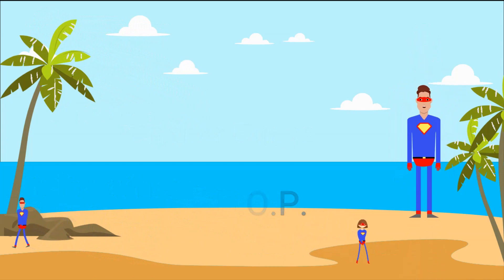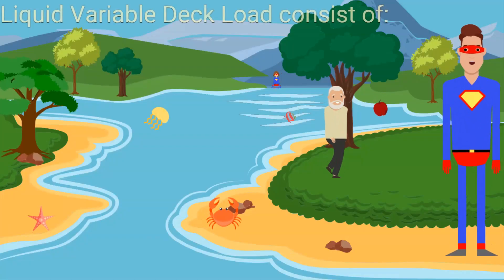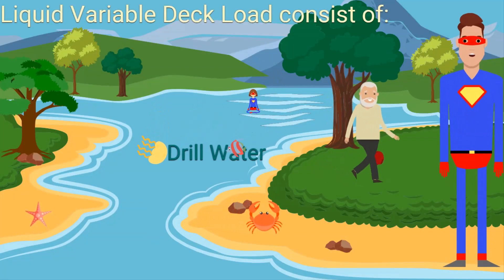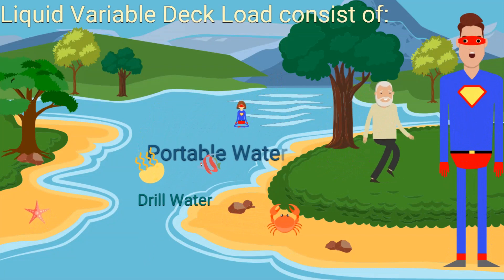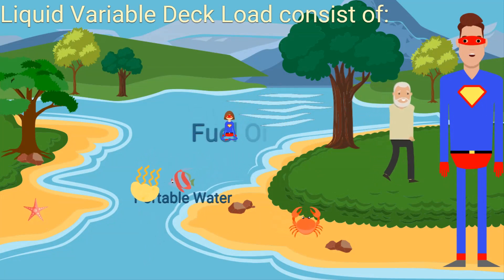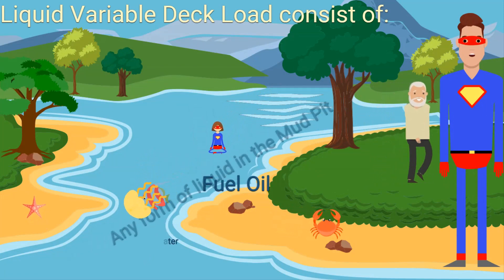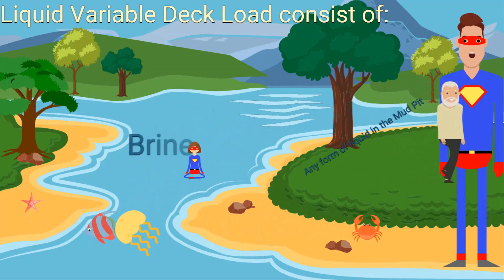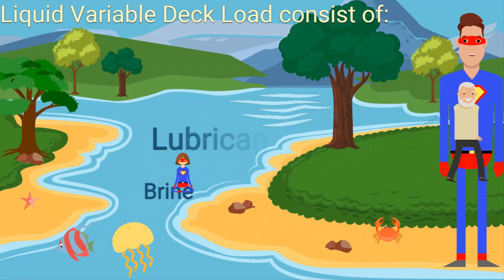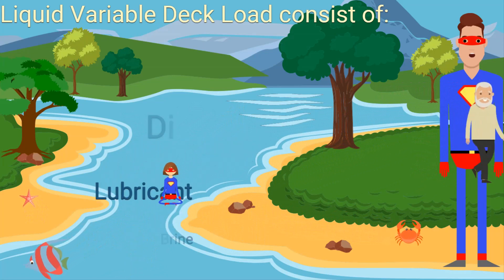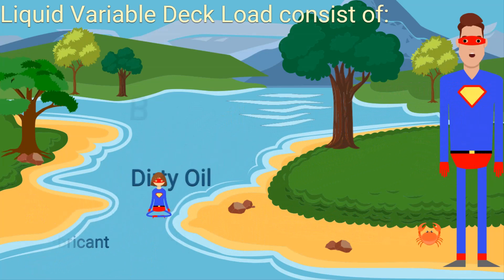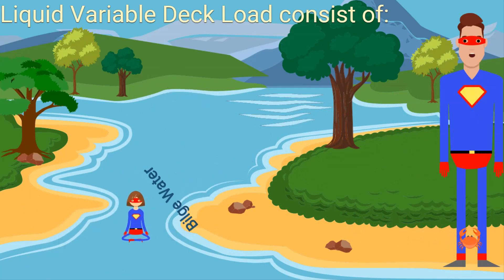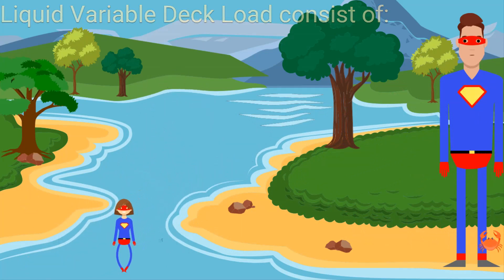Liquid Variable Deck Load consists of drill water, potable water, fuel oil, any form of liquid in the mud pit, brine, lubricant oil, dirty oil and bilge water tanks, and any form of liquid onboard the jackup rig.